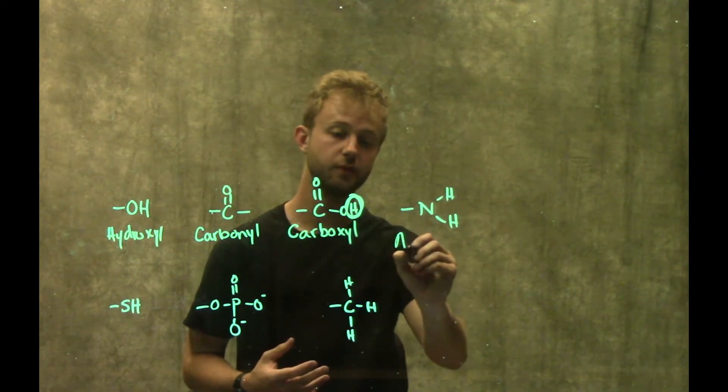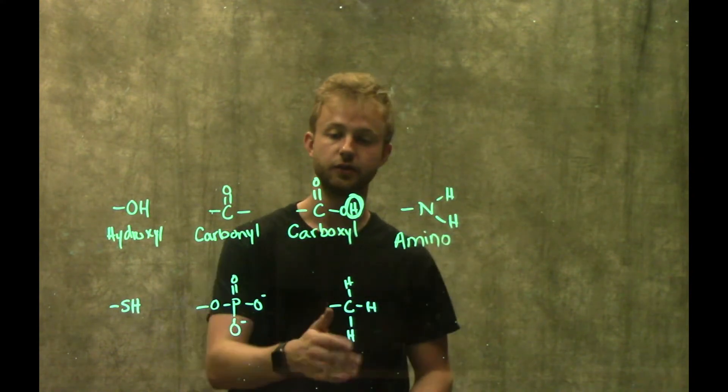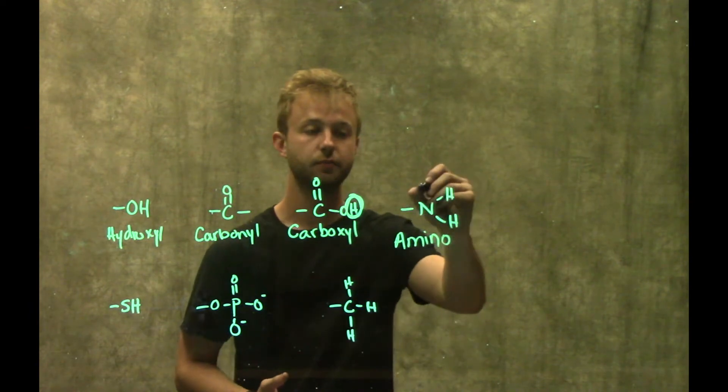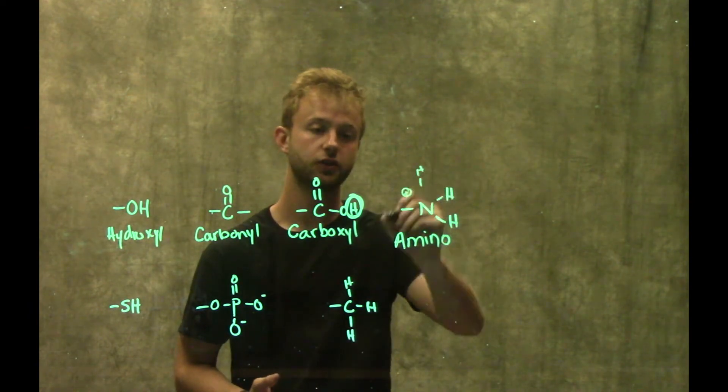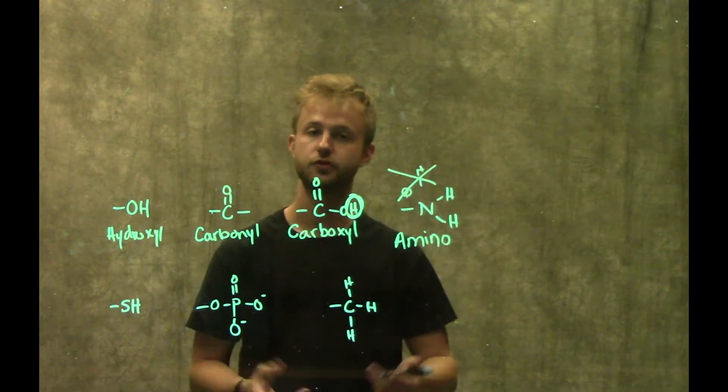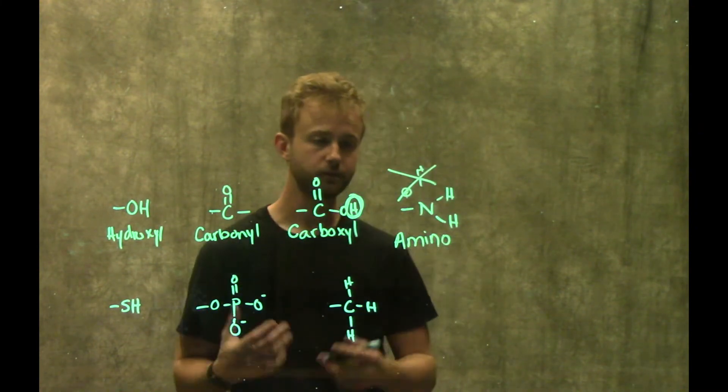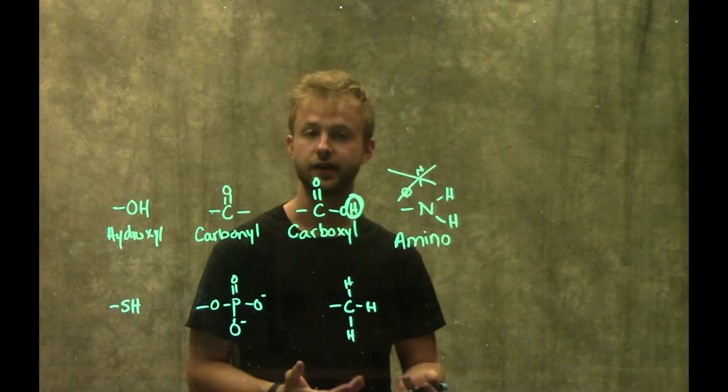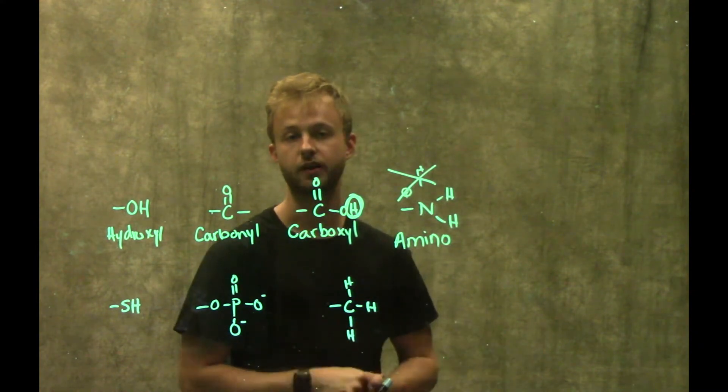Another group that's very important in proteins is this amino group. Similarly to the carboxyl group, the amino group is an ionizable group, so it can gain another proton and become positively charged under certain conditions, and then under other conditions it can give up that proton and go back to neutral. This is very important in amino acids, which is kind of where they get their name from, and it's very important in protein structures.